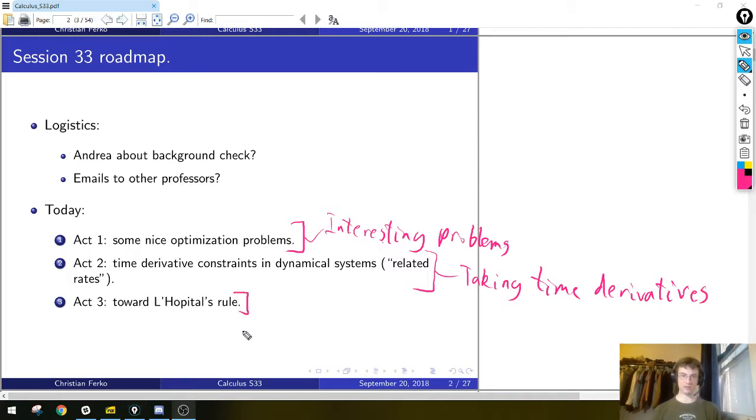And then act three, we won't quite get to proving it, but the last thing we'll use derivatives for in this chapter will be something called L'Hopital's rule, which is a French name that is spelled in many different ways. Sometimes you'll see it written like L'Hopital with an S, like hospital. It's just a rule named after a French guy, and we will state the rule today and then probably prove it next time.